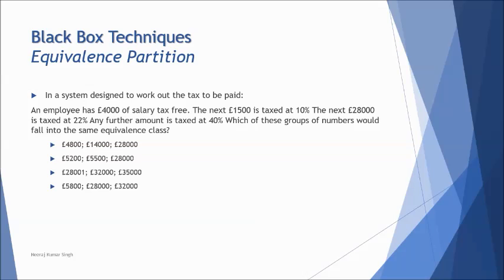There's another example to understand in more detail about equivalence partition. I've taken a little tricky example here where the mathematical terms are really important to be understood. The moment you go wrong with less than or less than equal to or greater than, greater than equal to, between or next, these are the words which will be used by ISTQB to create diversions. And all you have to do is pay attention and get the right answer. In a system designed to work out the tax to be paid, an employee has $4,000 of salary tax-free. The next $1,500 is taxed at 10%. The next $28,000 is taxed at 22%. Any further amount is taxed at 40%. Which of these groups of numbers would fall into the same class?